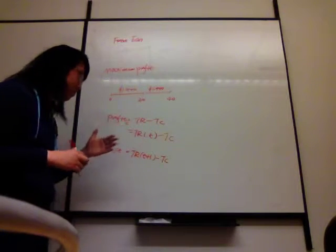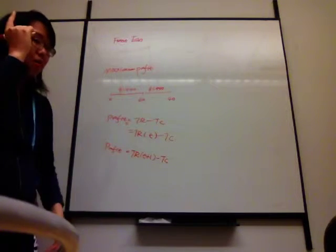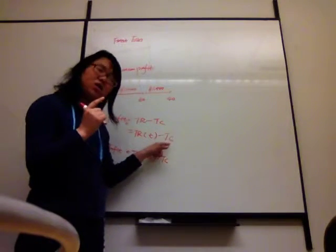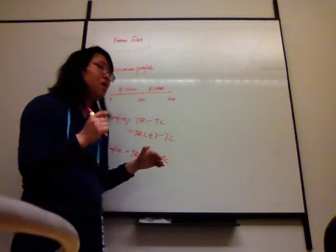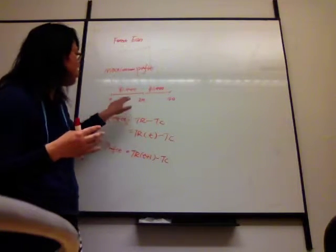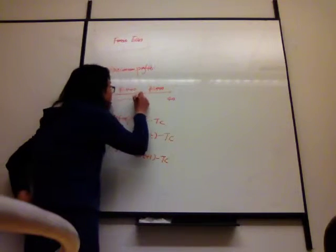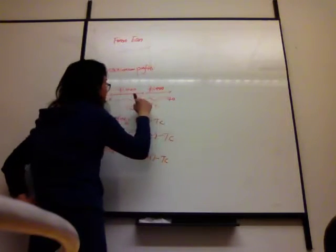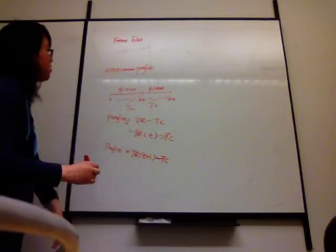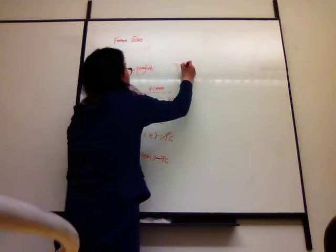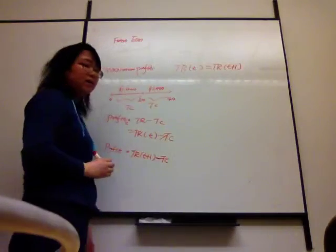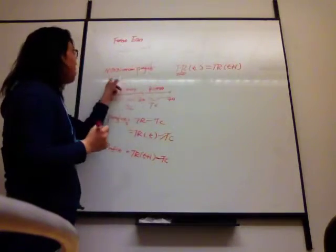Why is the total revenue dynamic? Because when you calculate the revenue, it usually goes up with time — so revenue is a function of time. But the total cost is still a static term, because when you plant trees you usually follow the same method, whether from year 0 to 20 or from year 20 to 40. So we don't need to worry too much about total cost. To calculate the maximum profit, we set the total revenue from period t equal to the total revenue from period t plus 1.